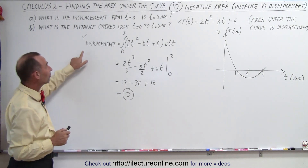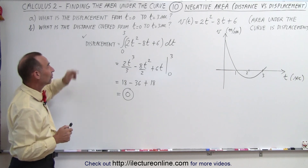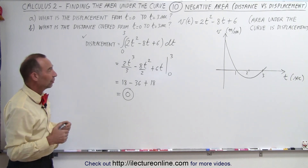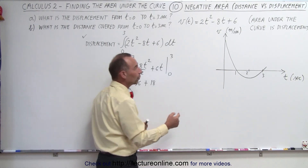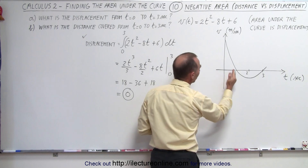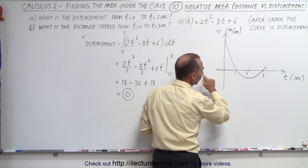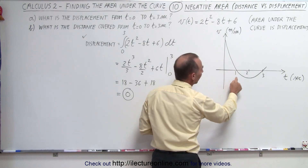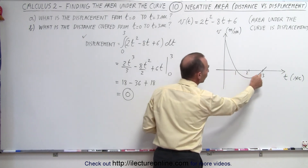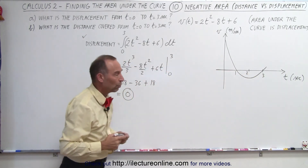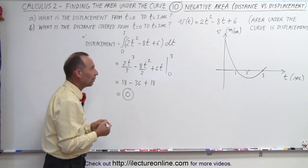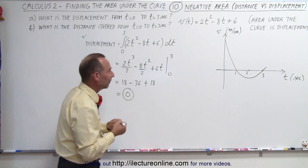That doesn't mean the object didn't cover any distance — it actually did move forward then backward, so it covered distance. Now let's find the distance covered. To do that we have to do two integrals: first integrate from 0 to 1, which is forward motion, and then from 1 to 3, which is backward motion.